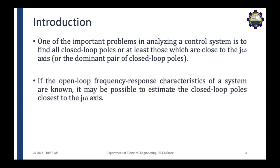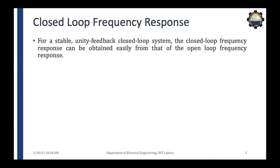If the open loop frequency response characteristics of a system are known, it may be possible to estimate the closed loop poles closest to the j-omega axis. For a stable unity feedback closed loop system, the closed loop frequency response can be obtained easily from that of the open loop frequency response.